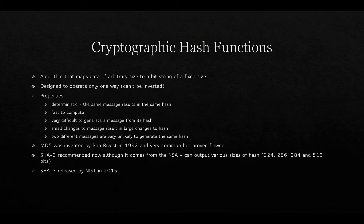The properties of hash functions are: they are deterministic — the same message always results in the same hash; they are very fast to compute; it is very difficult to generate a message from its hash; and small changes in the message result in large changes to the hash. For example, changing a single character in a document will produce a completely different hash. Two different messages are very unlikely to generate the same hash, but hash collisions do occasionally happen.